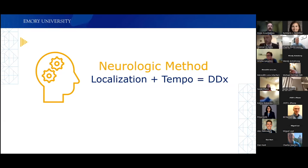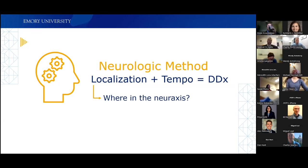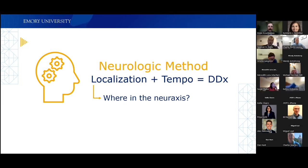Thanks so much, Charlie and Dylan, for having me. I want to begin by thinking about the case the way neurologists often do — approaching it from the standpoint of using localization and tempo of disease development to sort through the differential diagnosis. Certain things affect certain parts of the nervous system, so if you can identify the localization, you can generate a differential just from that, and combining it with tempo further filters the list.